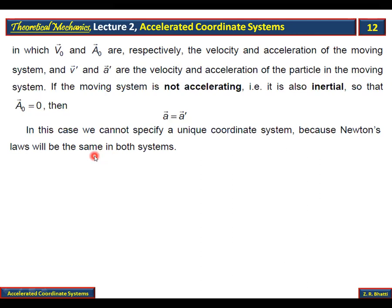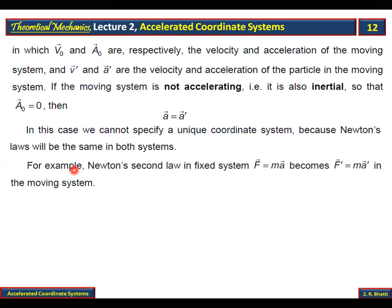In this case, we cannot specify a unique coordinate system because Newton's laws will be the same in both systems. For example, Newton's second law in the fixed system: F = ma becomes F-dash = ma-dash. This is because A-naught is zero. So the moving coordinate system is also inertial.